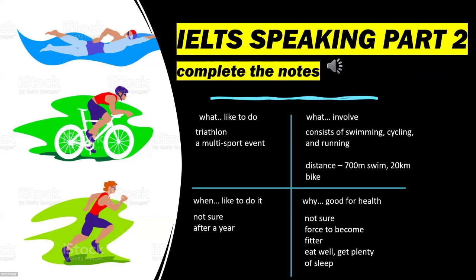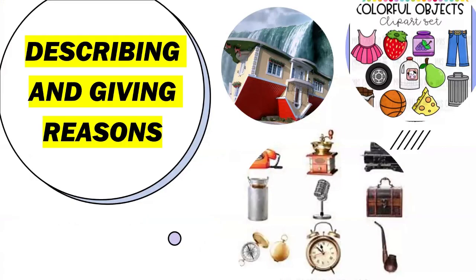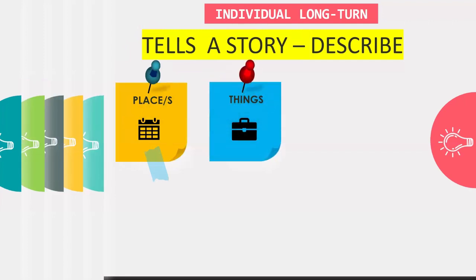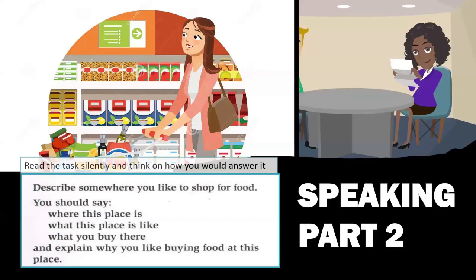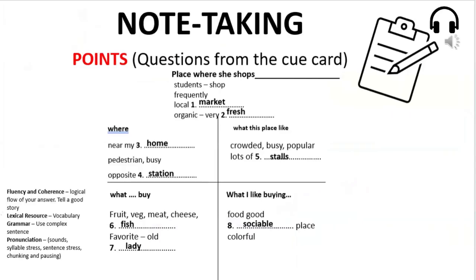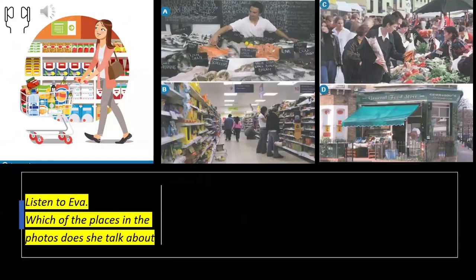As you can see, the candidate didn't describe steps or stages in a story — that wasn't what was asked. The candidate simply described the event. Now the fourth type of question asks you to describe and give reasons — describing places, things, events, and people and giving your reasons. For example: describe somewhere you like to shop for food — where this place is, what it is like, what you buy there, and what you like buying.